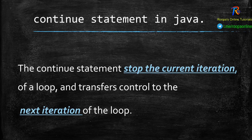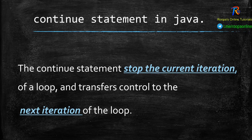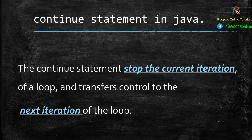Now let us look at the continue statement in Java. The continue statement is a keyword which will stop the current iteration of the loop and transfer control to the next iteration. Inside the loop, when a continue keyword is found, it will skip that iteration and the statements after it, and pass control to the update expression — the increment or decrement operator — then continue with the rest of the loop. In break, it exits completely from the loop; here, it only skips that part and continues with the remaining iterations.